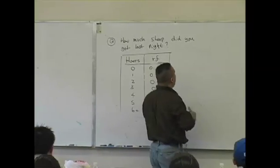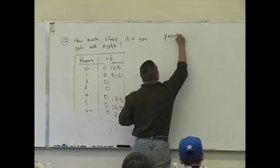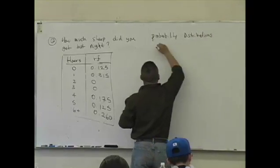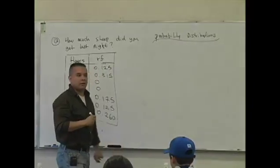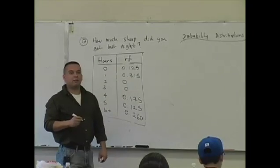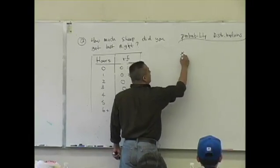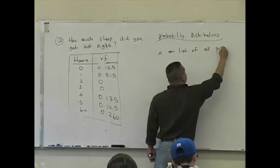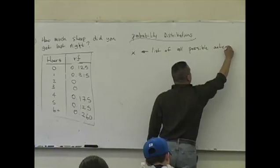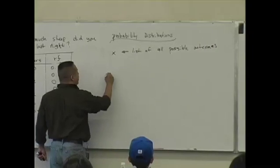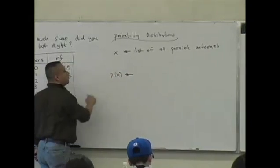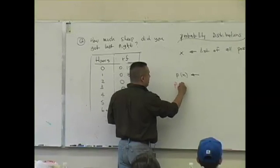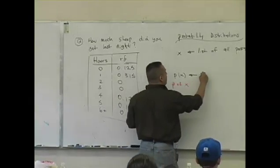Now we're going to talk about what's known as probability distributions. This actually is a probability distribution, and I'll show you how. First, let me define a few things. X is the list of all possible outcomes. P(x) — and yes, this is functional notation — P(x) is defined to be the probability of x.